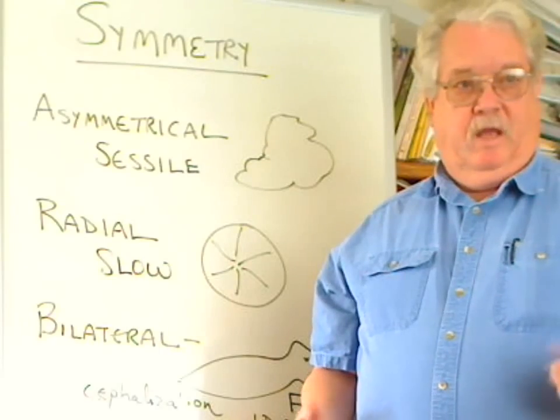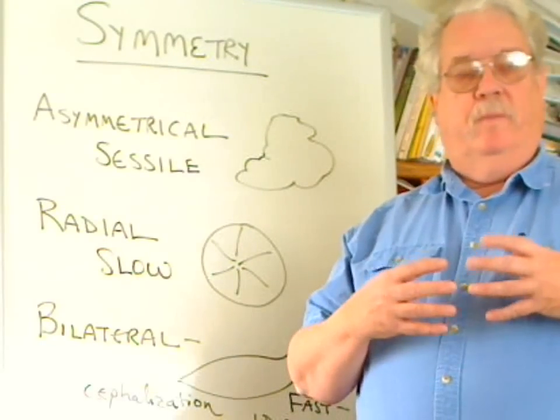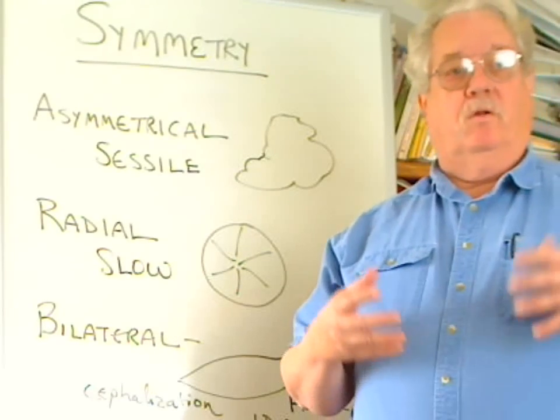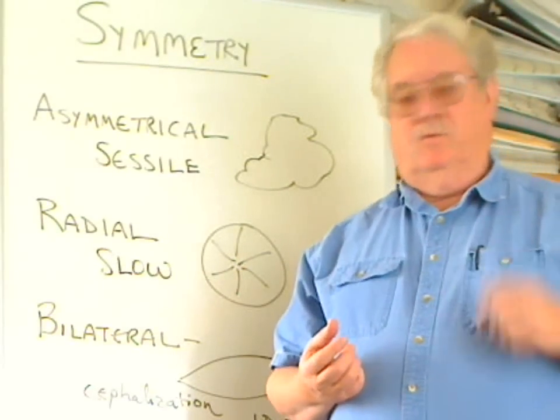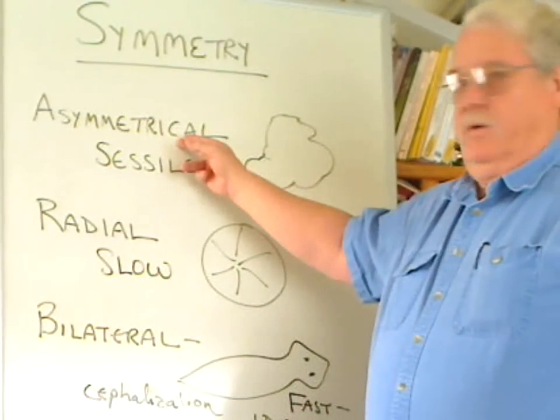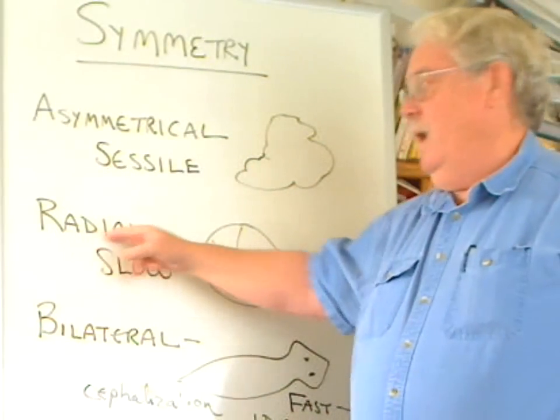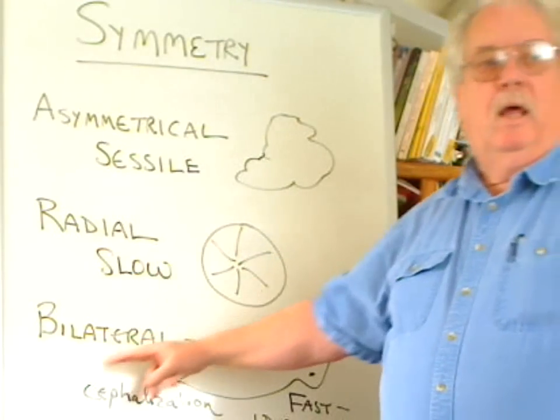One of the characteristics of the animal phyla is their basic body form, what we call their symmetry, how they're built. And we have three classes of symmetry: asymmetrical, radial, and bilateral.